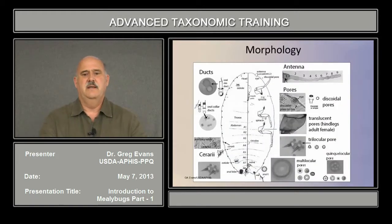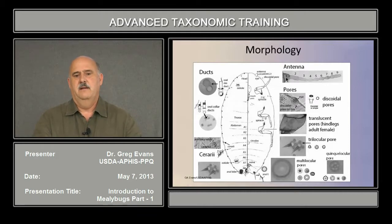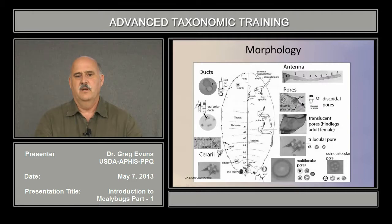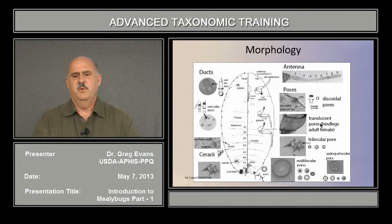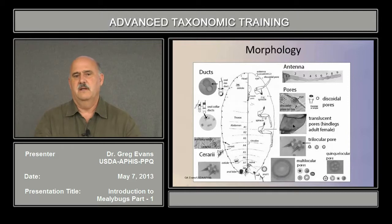Going over some of the morphology: the antennae are counted from the base, segment one up to segment nine. Antennae aren't used much for distinguishing genera and species other than the number of segments. Discoidopores are small and round with no internal divisions. They're not used much in mealybug taxonomy except for those around the eye — whether they occur on a sclerotized rim around the eye is significant in keying to some genera. Translucent pores on the hind legs are very tiny, minute, roundish dots found on different segments of the hind legs, and are very important for species differentiation.